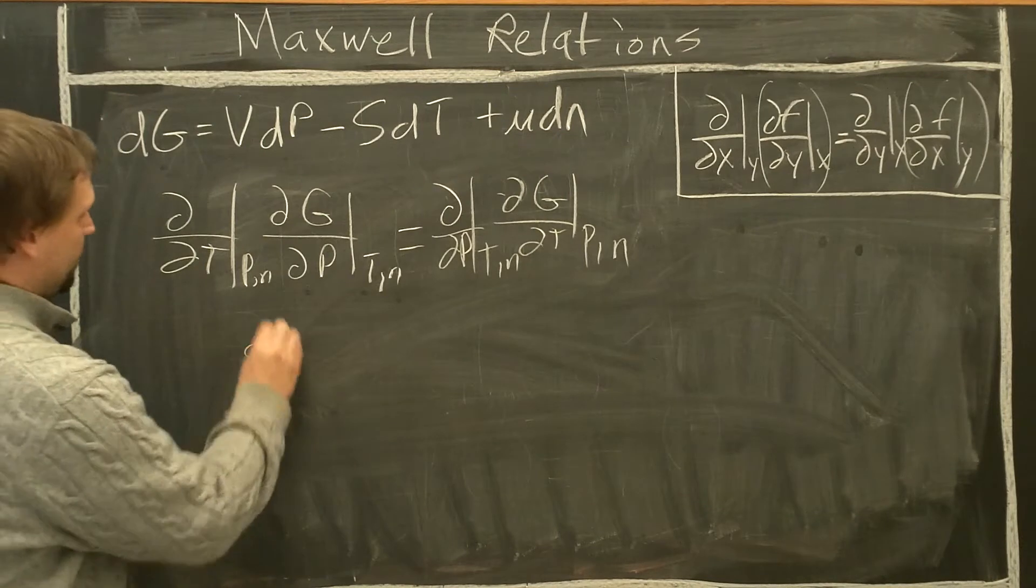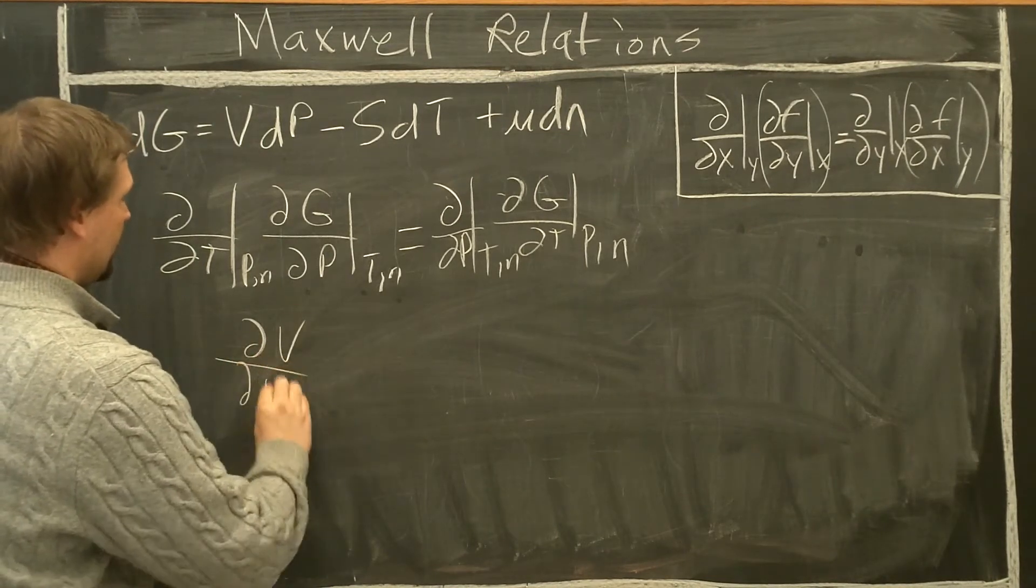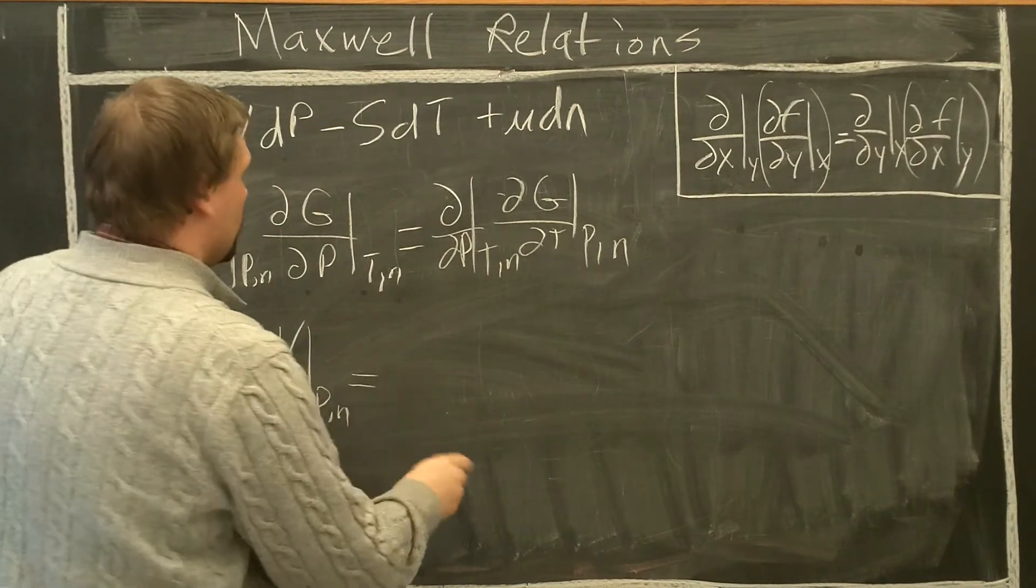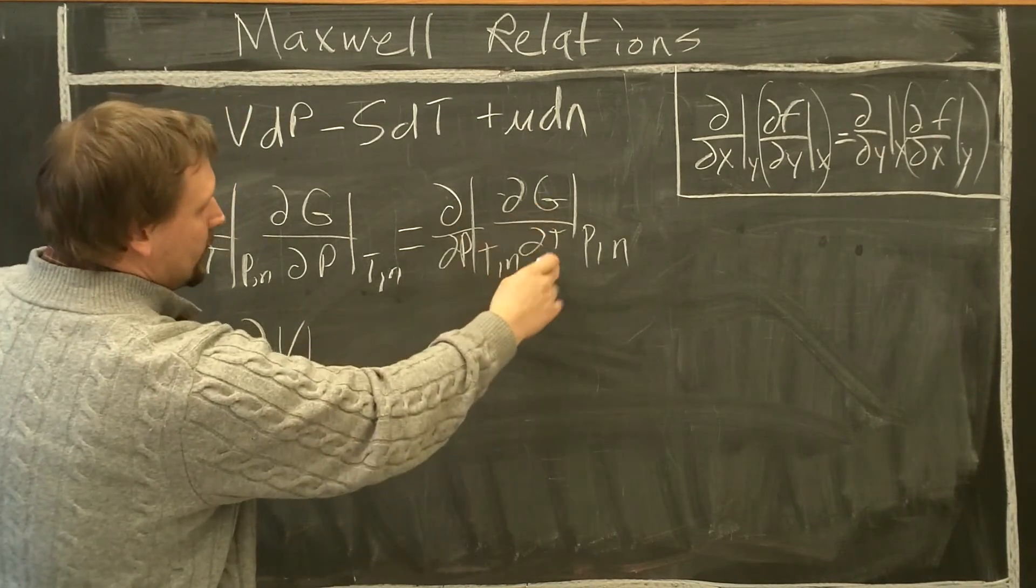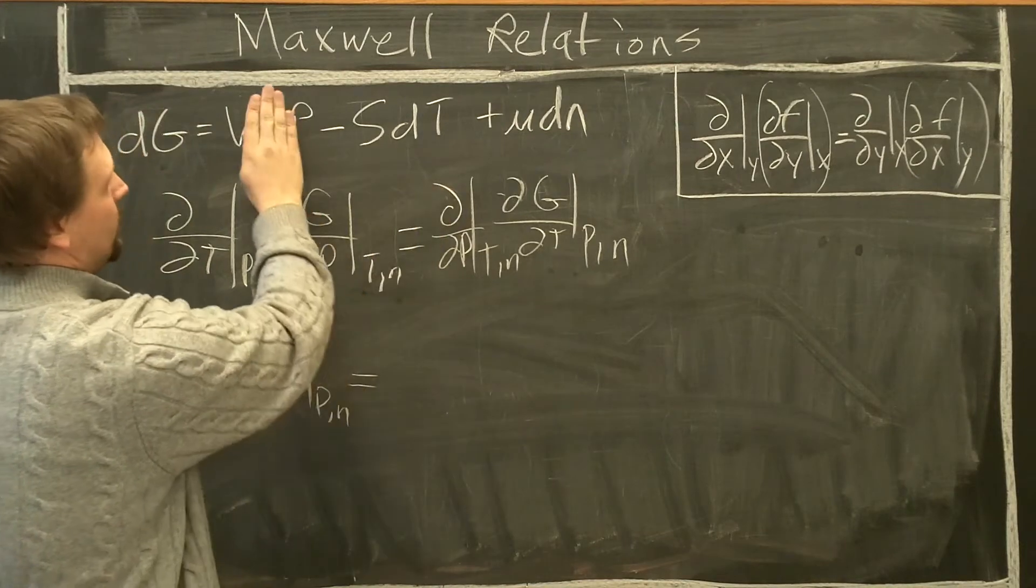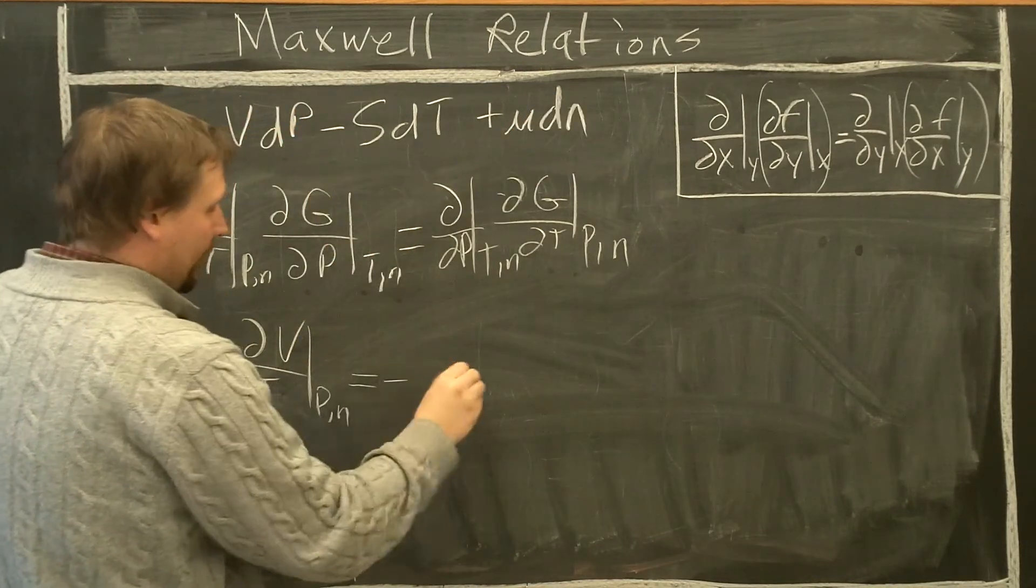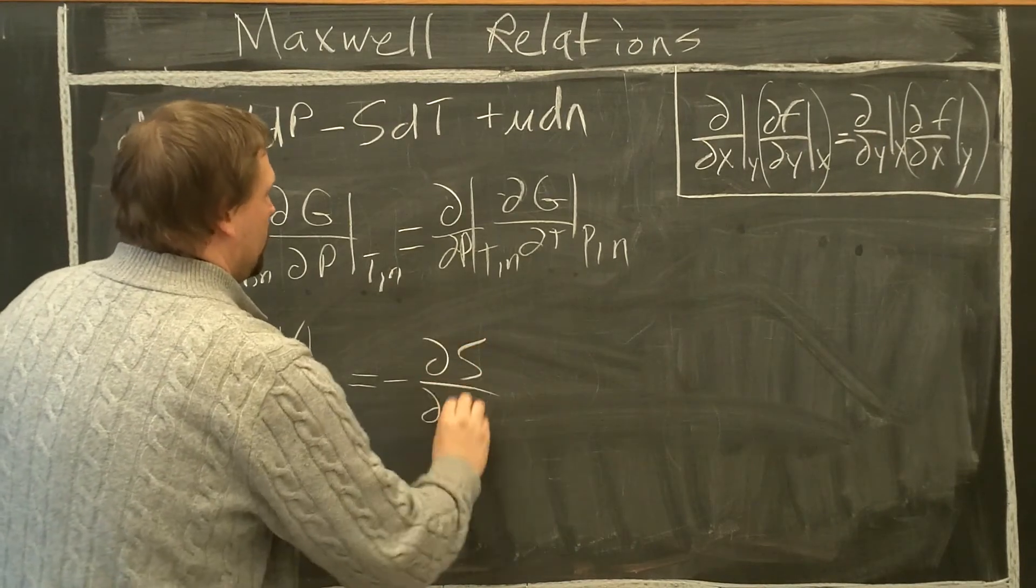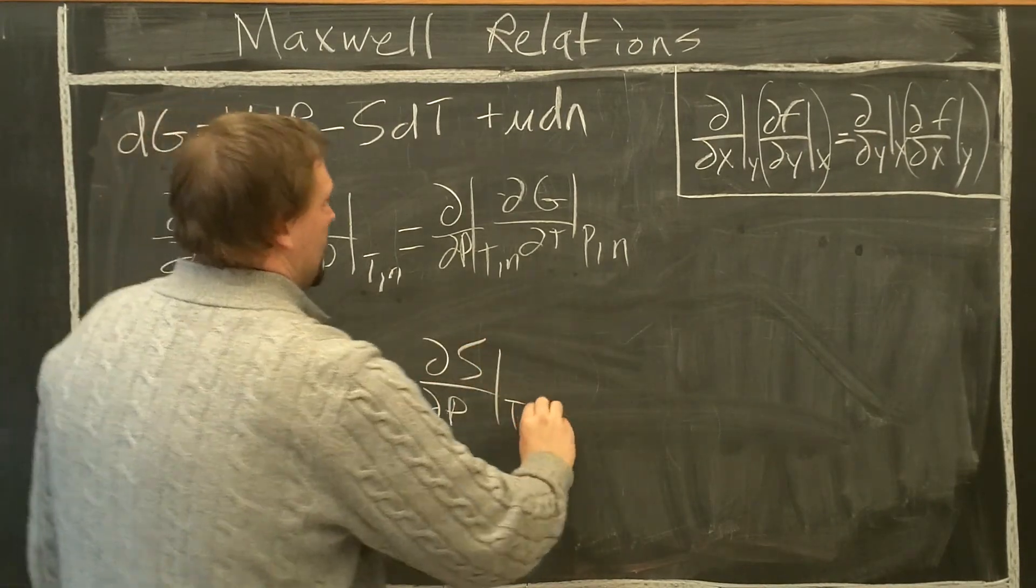Equals dG/dT at constant P here, so constant P, constant N, minus S. Let's pull it out right away since it's getting really easy. Partial S partial P constant T comma N.